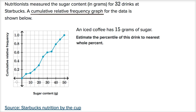Let's make sure we understand how to read this. This is saying that zero percent of the drinks have no sugar content. This data point looks like it's at 5 grams, and then this looks like it's at 0.1 — meaning 10 percent of the drinks that Starbucks offers has 5 grams of sugar or less.